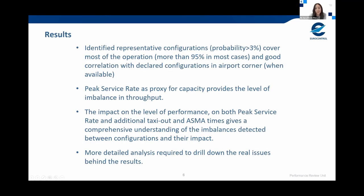In terms of results, the approach shows good coverage — more than 95% of operations in terms of identifying a valid runway configuration for each time interval. The peak service rate as a proxy for capacity provides the level of imbalance in throughput. The impact on the peak service rate combined with the impact on additional times provides a comprehensive understanding of the imbalances detected. It is important to clarify that results shown in the technical note are a high-level indication and cannot explain the reasons behind them — more detailed analysis per airport would be required, breaking down results by season, day of week, time of day, etc.